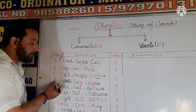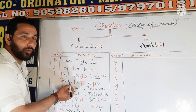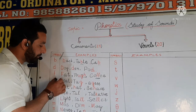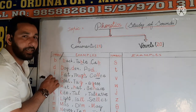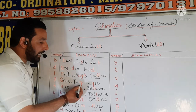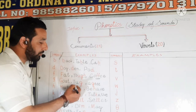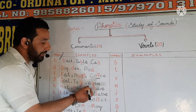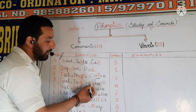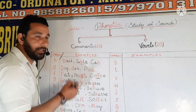In the next we have G. The sound we produce here is the sound of this phonetic symbol G. For example, 'goat' — the sound we produce here is G. Next is 'tug' — the sound we produce here is G. Next is 'agree' — we again produce the sound G.